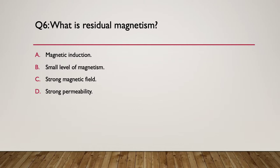Question six: what is residual magnetism? Is it A — magnetic induction; B — a small level of magnetism; C — a strong magnetic field; or D — strong permeability? Pause here.